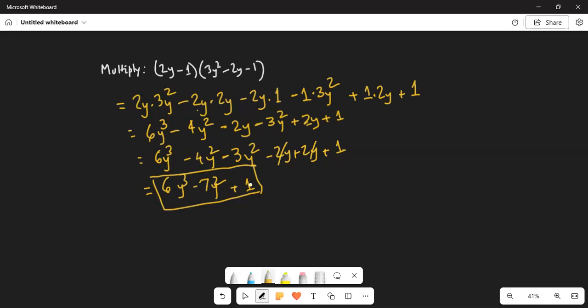So 2y distributed to 3y squared, 2y distributed to minus 2y, and 2y distributed to minus 1. Similarly, minus 1 distributed to 3y squared, minus 1 distributed to minus 2y, and minus 1 distributed to minus 1.